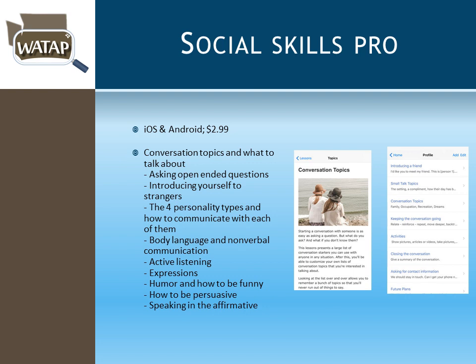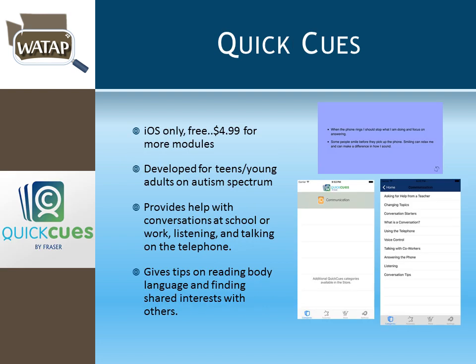Quick Queues is a $5 iOS-only application specifically designed for teens and young adults on the autism spectrum. It has modules providing suggestions on how to start conversations at school, at work, and even on the telephone. This generation communicates heavily through social media and text messaging, so the telephone etiquette feature is especially valuable.